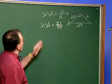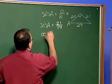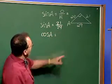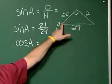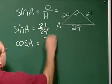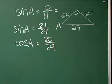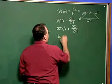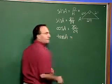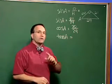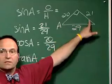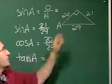Next we'll find the cosine. The cosine of A is the side adjacent to A, which is 20, divided by the hypotenuse, which is 29. So cosine of A is 20 over 29. The tangent of A is equal to the opposite over the adjacent, so the opposite is 21 and the adjacent is 20, giving us tangent of A equals 21 over 20.